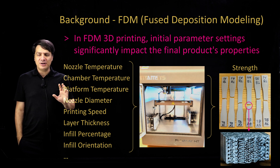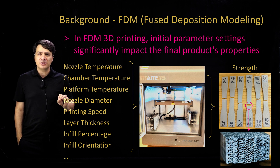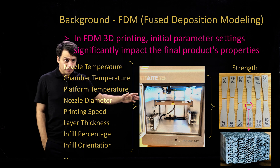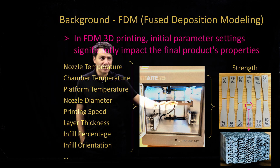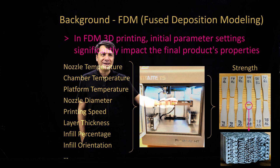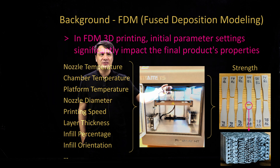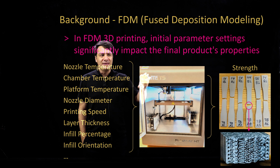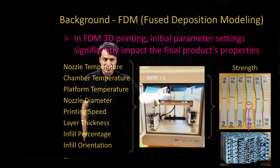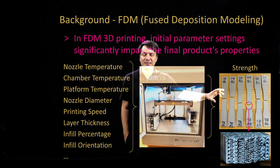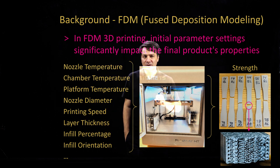Specifically, we're going to look at fused deposition modeling — that's FDM — and we are looking at a specific type of material, in this case the thermoplastic material that we are printing. Then we are testing it in tension and looking at tensile strength.